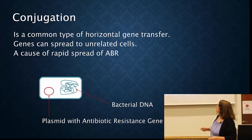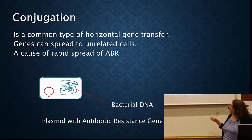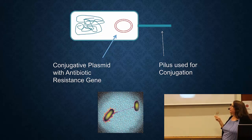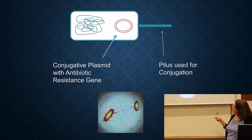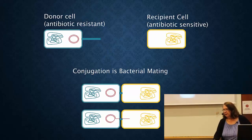Conjugation occurs incredibly commonly and can cause genes to spread to unrelated cells. Here's a plasmid with an antibiotic resistance gene. Some plasmids are called conjugative - they have extra features. They produce a pilus, which is an appendage off the cell that is used for conjugation. This shows an actual picture of two cells where one of them is expressing this pilus and attaching to another cell.